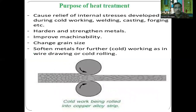The purposes of heat treatment are: it causes relief of internal stresses developed during cold working, welding, casting, and forging; it hardens and strengthens the metal; it improves the machinability; it changes the grain size; and it softens the metal for further cold working, as in wire drawing or cold rolling. After cold working — such as copper alloy strip being cold rolled — heat treatment can be performed to remove the stresses.